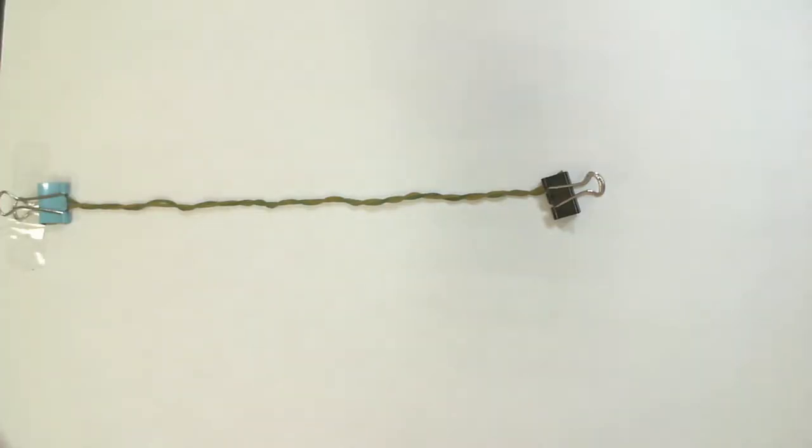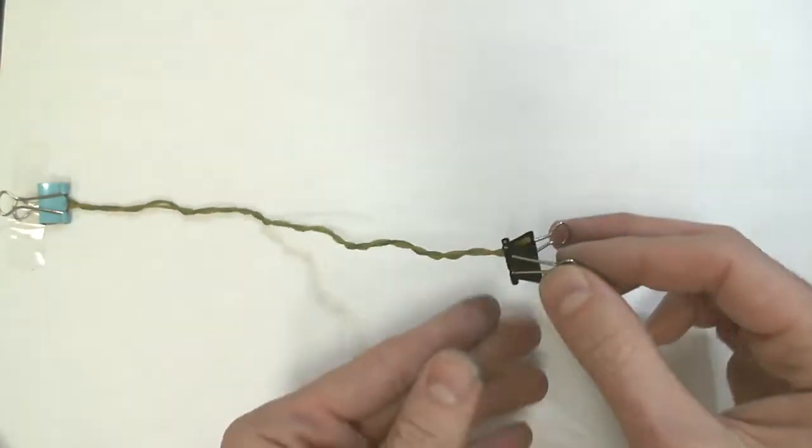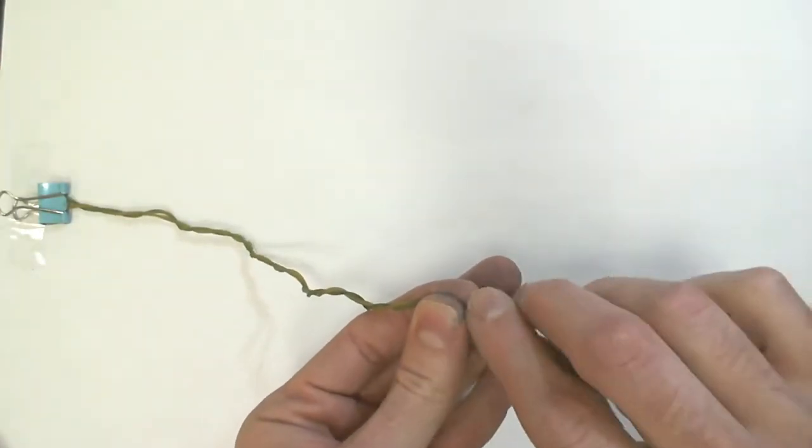So what is supercoiling? Well, simply put, it is a method of compacting DNA by adding more twists to the double helix. So let me just open up this clip and start doing that.